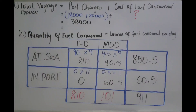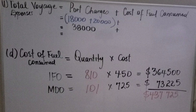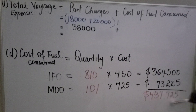I've highlighted the total IFO and total MDO quantities because those are needed for section D. In section D, we multiply quantity by cost per metric ton. IFO is $450 per metric ton: 810 × 450 = $364,500. MDO is $725 per metric ton: 101 × 725 = $73,225. The total cost of fuel consumed is $437,725.